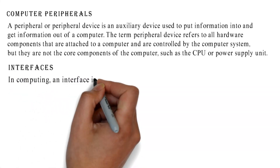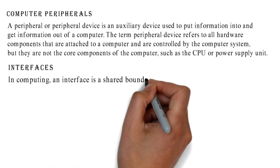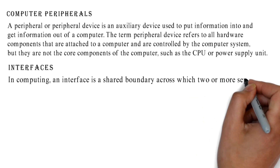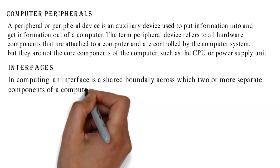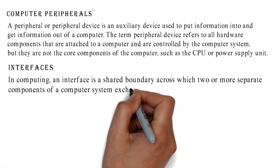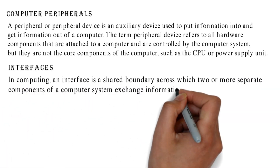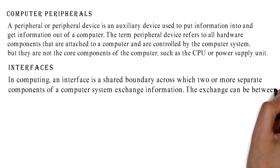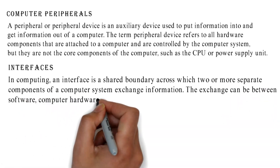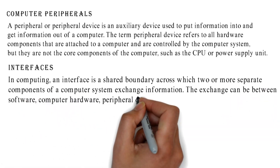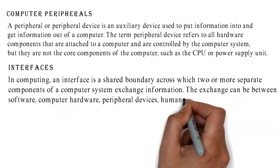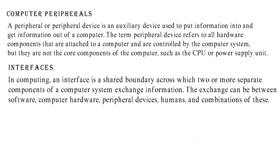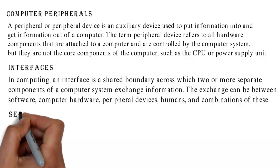Interfaces. In computing, an interface is a shared boundary across which two or more separate components of a computer system exchange information. The exchange can be between software, computer hardware, peripheral devices, humans, and combinations of these.